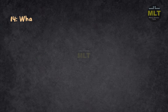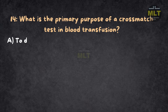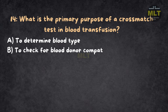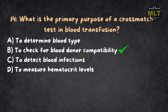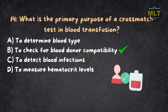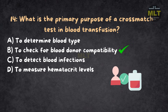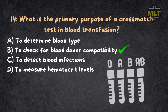Question 14: What is the primary purpose of a cross-match test in blood transfusion? Option A: To determine blood type. Option B: To check for blood donor compatibility. Option C: To detect blood infections. Option D: To measure hematocrit levels. Correct answer: B, to check for blood donor compatibility. Cross-matching ensures compatibility between the donor's and recipient's blood, reducing the risk of transfusion reactions. Blood typing determines blood groups but not compatibility.